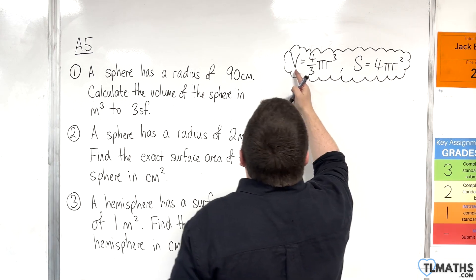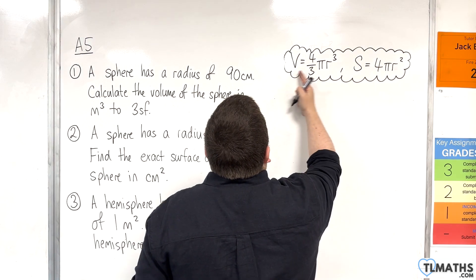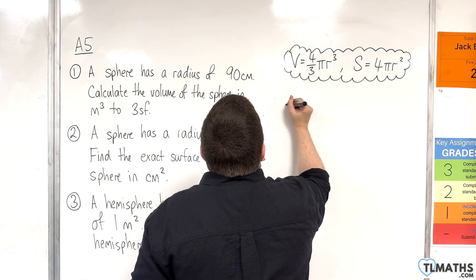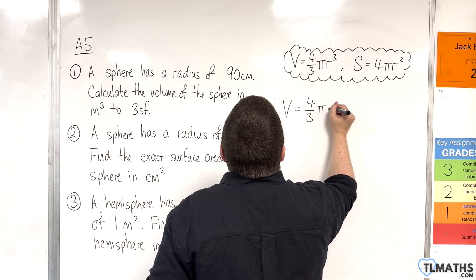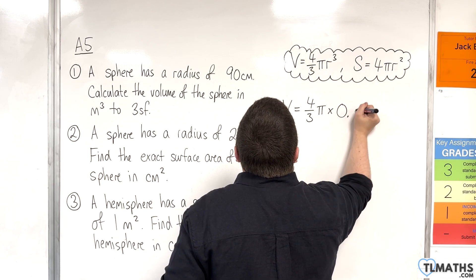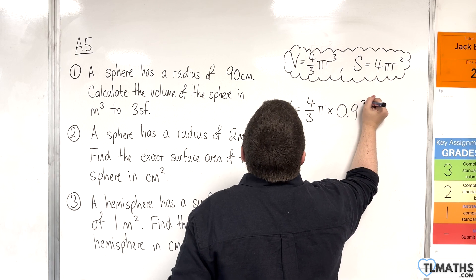So the volume formula given here, volume is 4 thirds pi r cubed. So the volume is 4 thirds pi times r, which is 0.9 meters, cubed.